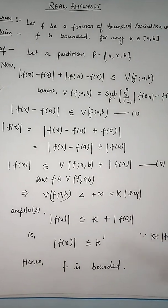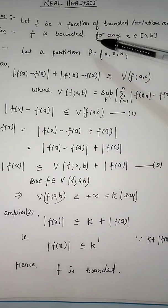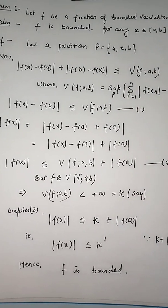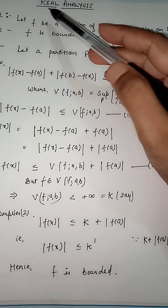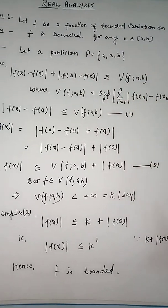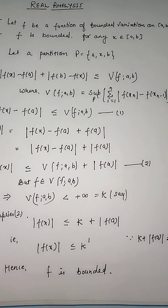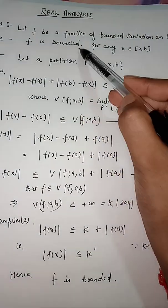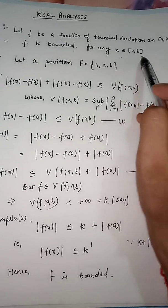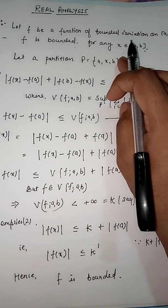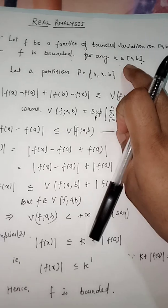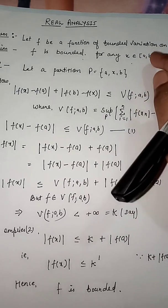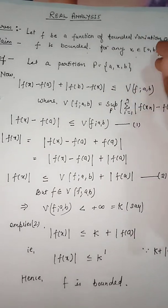Welcome back to my channel. This is a real analysis video where we will discuss a theorem based on bounded variation. The theorem states: let f be a function of bounded variation on the closed interval [a, b]. We have to show that f is bounded for any x belonging to the closed interval [a, b].